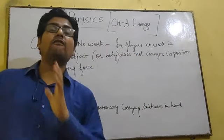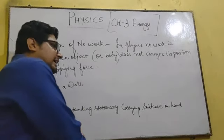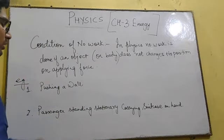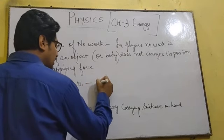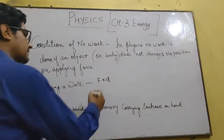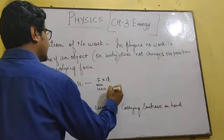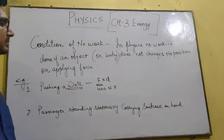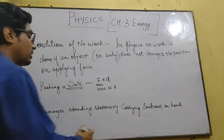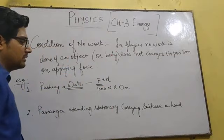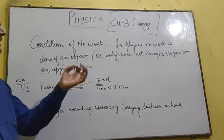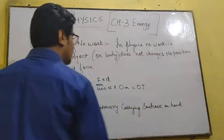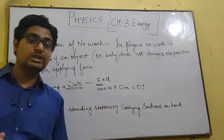Another simple example: suppose a ball is there and you apply force to push it, but it is not possible to shift it. The ball has not moved. Suppose you apply a force of one thousand units on that ball, but the body shows a displacement of zero meters — it has not shifted from its position. Force into zero equals zero. So the work done is zero; no work is said to be done.